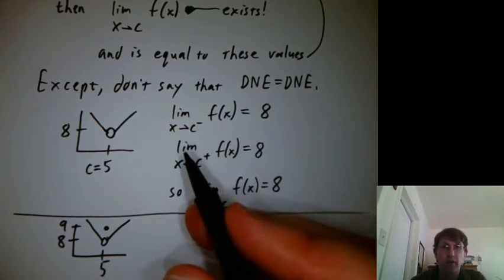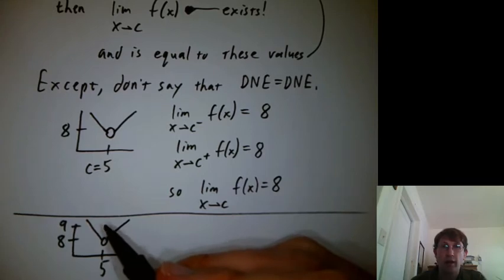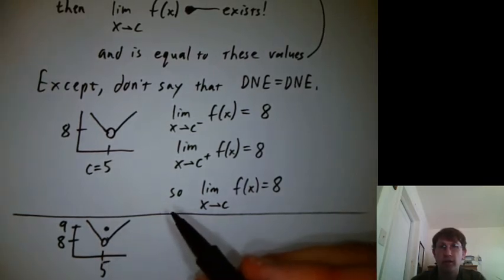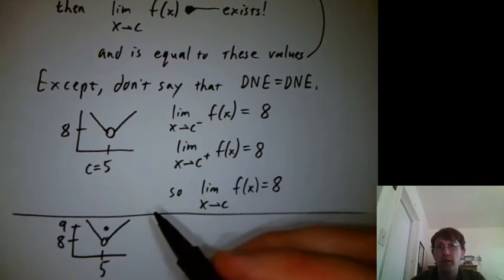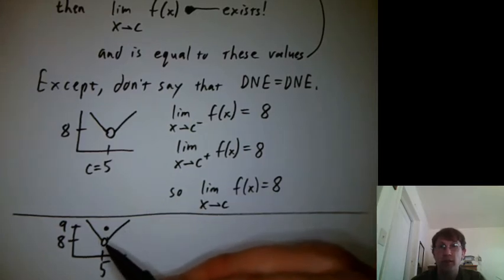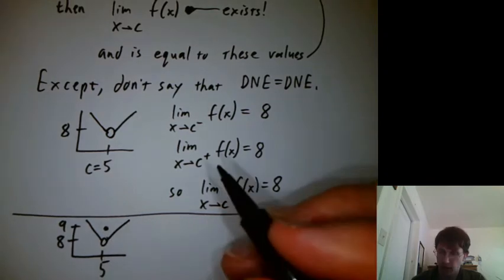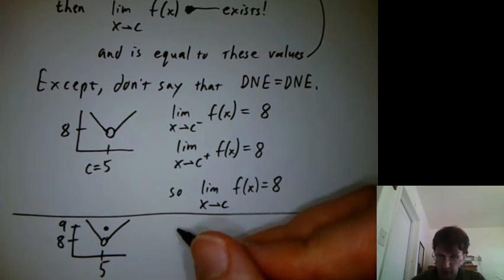It's the same story as before. The value at that x value itself, the y value at that x value, doesn't change anything that's going on with limits. The whole point of limits is to be able to ignore what's going on right at that value and talk about the behavior as you come close to it, but not care what's going on right there.